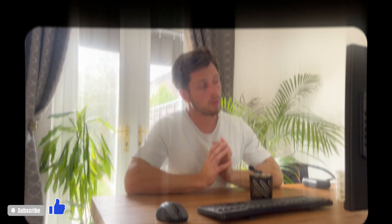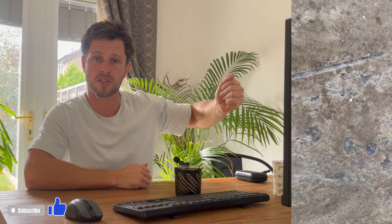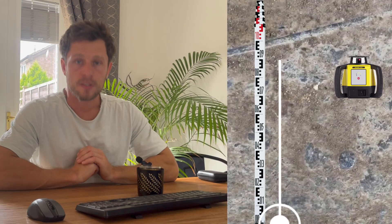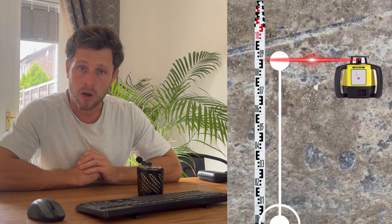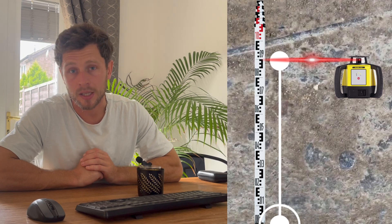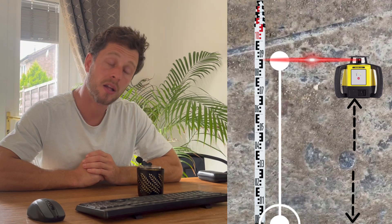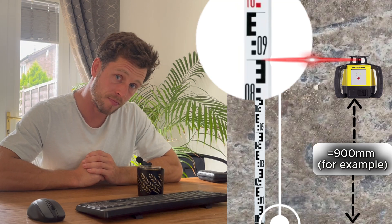We use the staff to get the level from the datum point to our work area. Once the laser head is set up, we'll walk over to our datum point and rest the staff on top of the datum. This will give us a measurement — specifically, how high our laser head is above the datum.